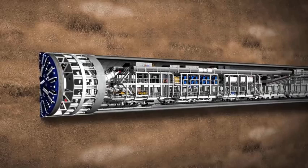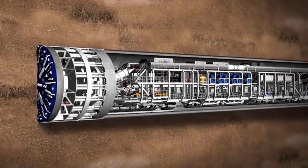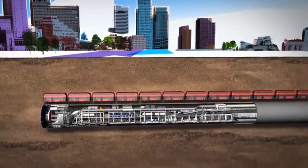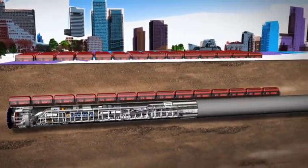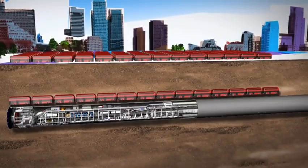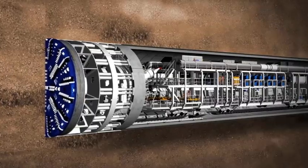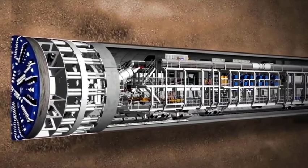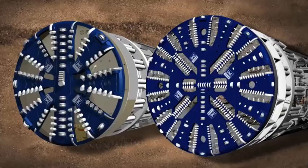A TBM is 148 meters long and weighs 1,000 tons. This is the equivalent of 14 London buses end-to-end and a staggering 143 buses in weight. It has a rotating cutter head at the front and a series of trailers behind housing all the mechanical and electrical equipment.